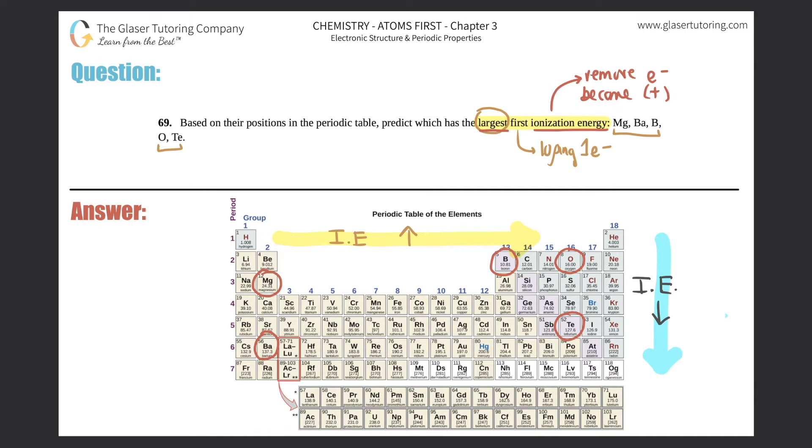And we want to know which one is larger. Well, I know that as I go down a group it actually gets smaller, so it can't be the ones that are down below. So that automatically gets rid of barium and tellurium. Now if I follow this trend, as I go from left to right, ionization actually increases, and we want to find out which one is the largest one. So which one do you think out of these three would be the largest ionization energy?